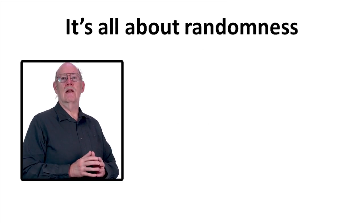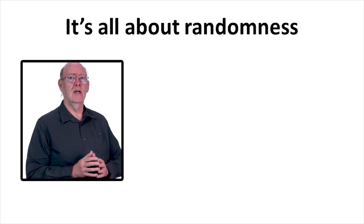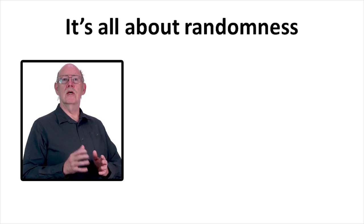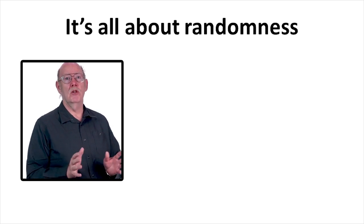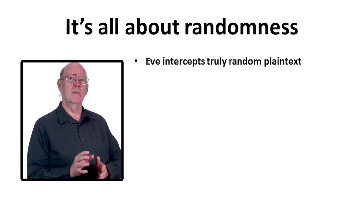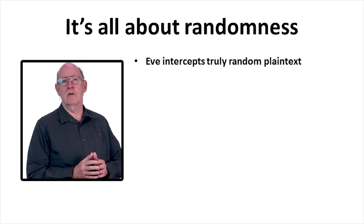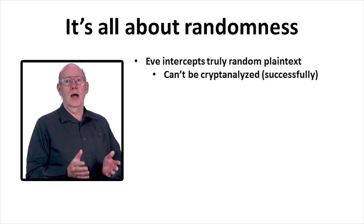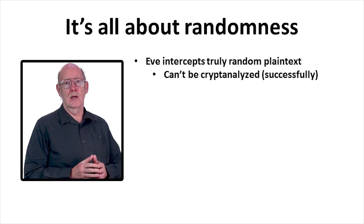Imagine that Alice constructs a plaintext message that is nothing but a sequence of truly random characters and transmits that to Bob, with no encryption. Eve intercepts it and, thinking that it must be ciphertext, tries to cryptanalyze it. Not surprisingly, she'll fail to do so.